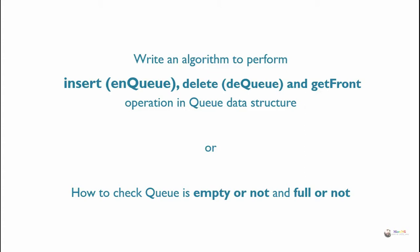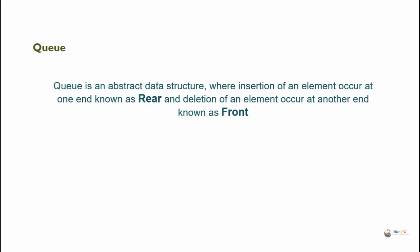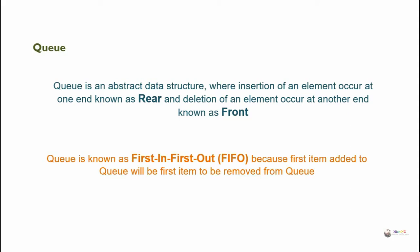Write an algorithm to perform insert or enqueue, delete or dequeue, and get front operations in a queue data structure, and how to check if a queue is empty or not and full or not. Queue is an abstract data structure where insertion of an element occurs at one end known as rear, and deletion of an element occurs at another end known as front. Queue is known as First In First Out (FIFO) because the first item added to the queue will be the first item to be removed.